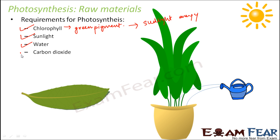The fourth requirement is carbon dioxide. How do the plants get carbon dioxide? Carbon dioxide is present in the atmosphere, and plants get it through the stomata on their leaves — the tiny pores on their leaves. That's how they get carbon dioxide.